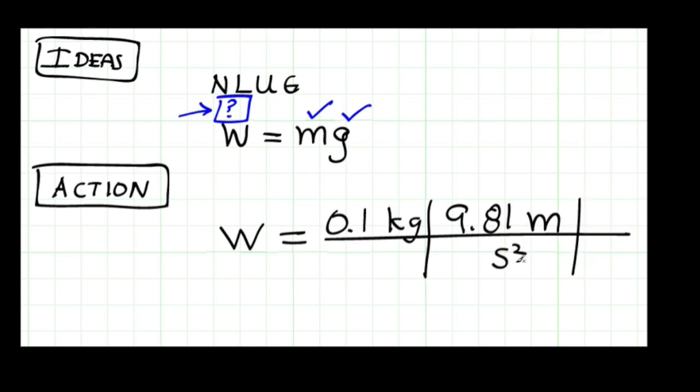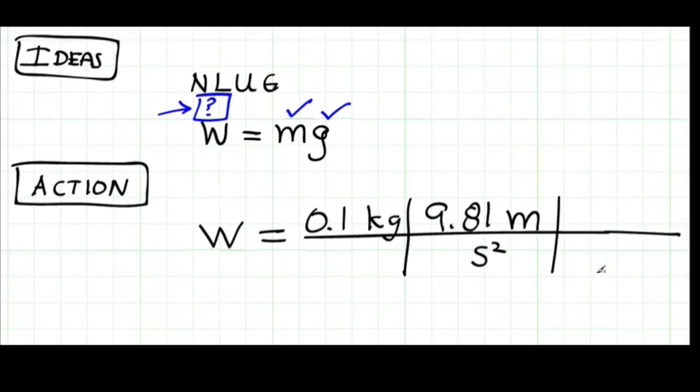To analyze units, I have kilogram meter per second squared here, and I need units in Newtons over here. So I need to multiply by 1.0, or a conversion ratio. And so I use the conversion ratio that a Newton, by definition, is a kilogram meter per second squared.